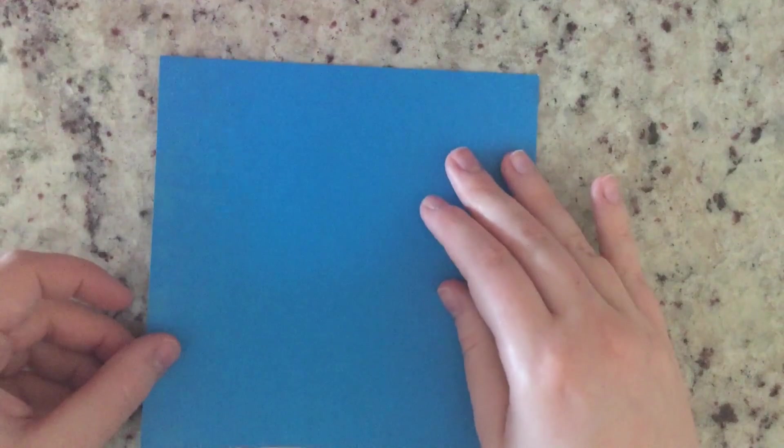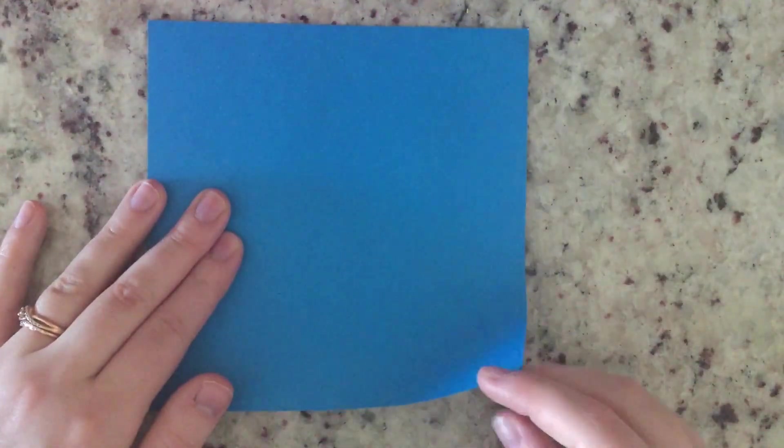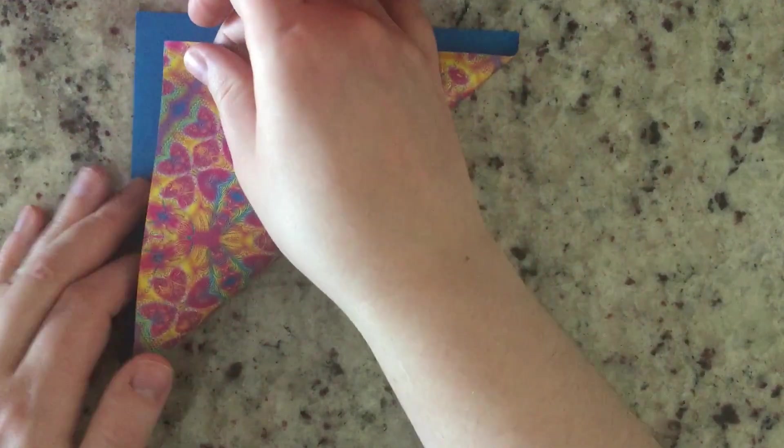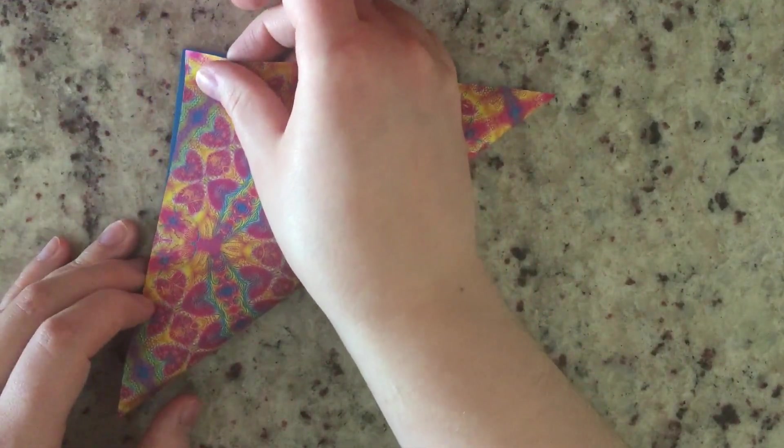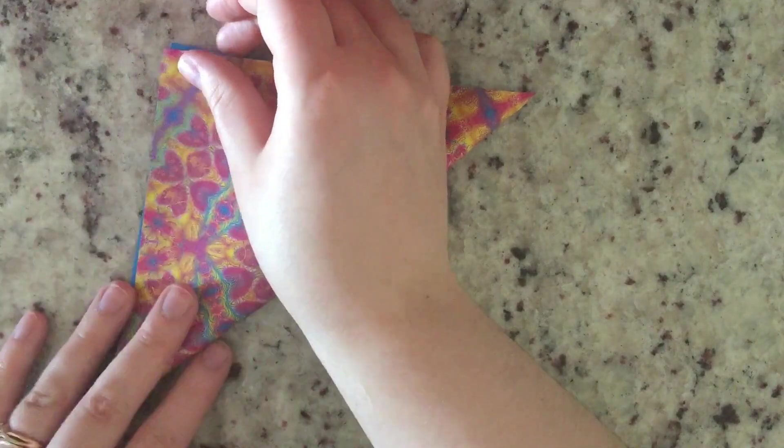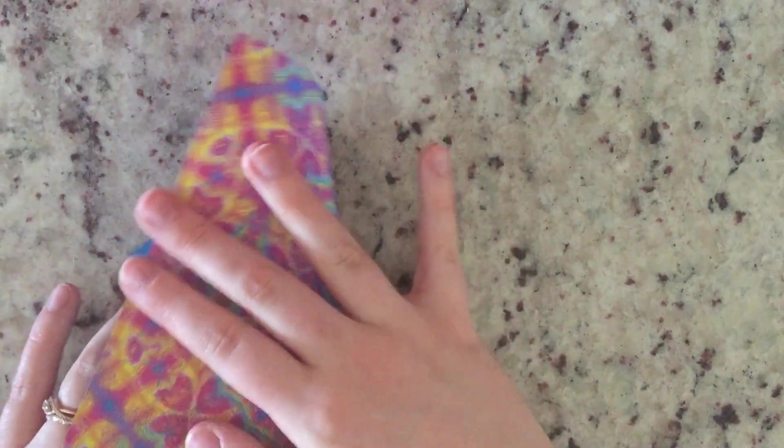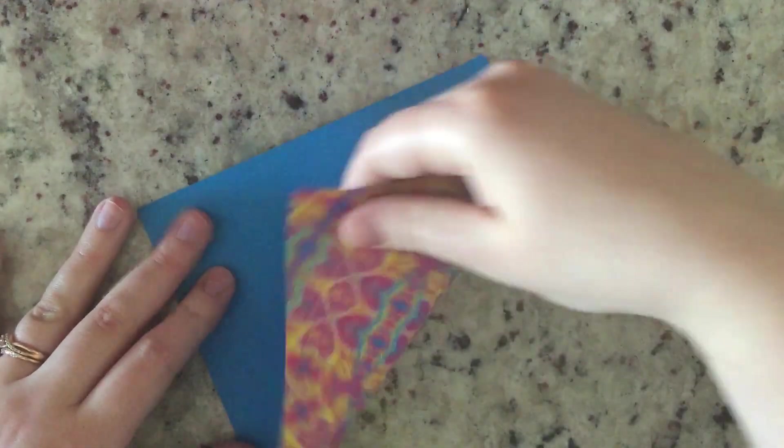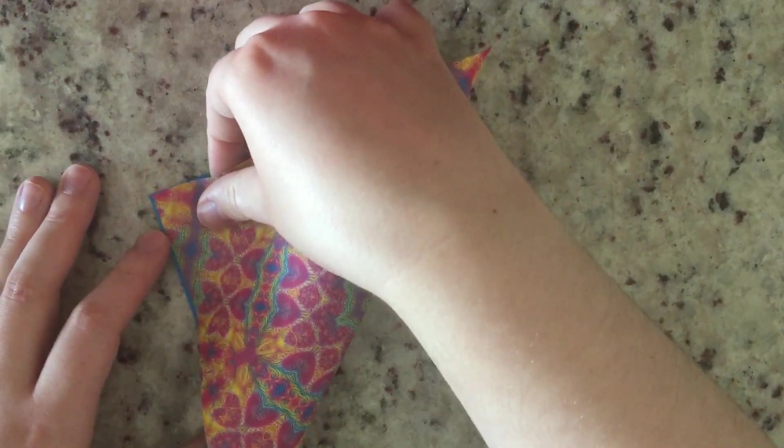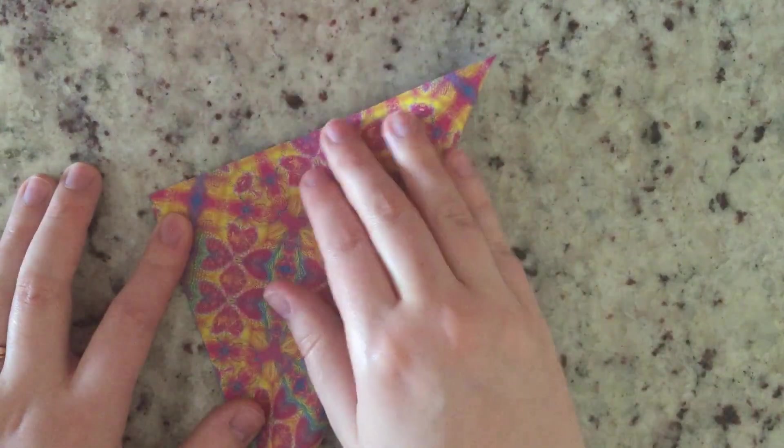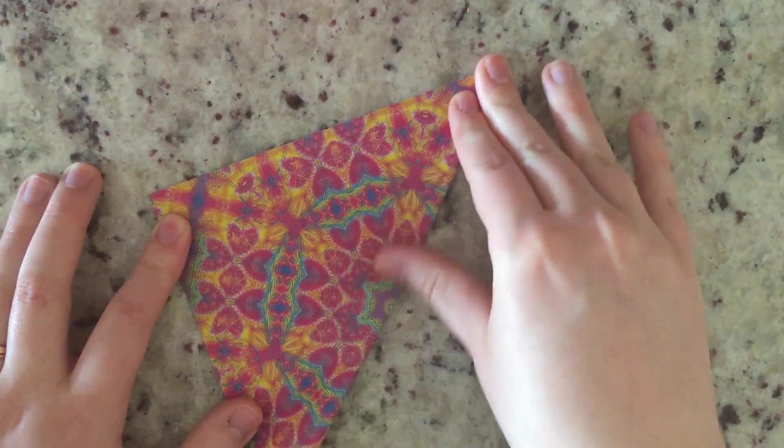So we're going to take this corner and fold it over so that it matches this corner. You want to make sure our folds are nice and tight. Let our edges line up really well before we push down on our fold.